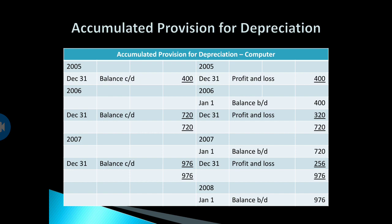You balance off the account at the end of the year — 31st December 2005 — with a balance carried down, which is brought down at the start of 2006. In 2006, you still calculate depreciation, so there is a charge to profit and loss of 320. Using the reducing balance method, depreciation is calculated on the carrying amount: 2,000 minus 400 equals 1,600, and 1,600 times 20% equals 320. That is the charge to P&L at the end of 31st December 2006.